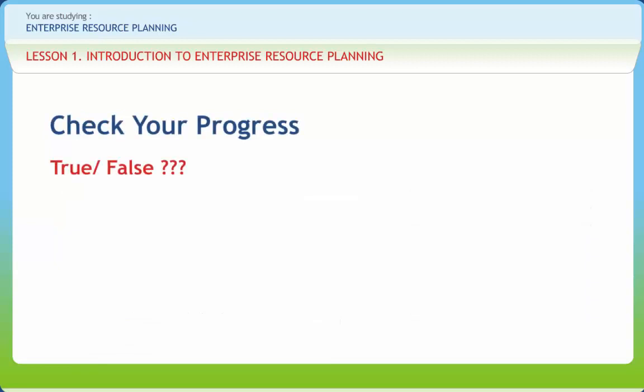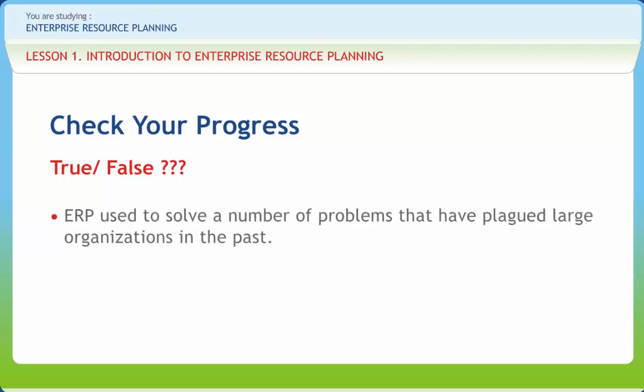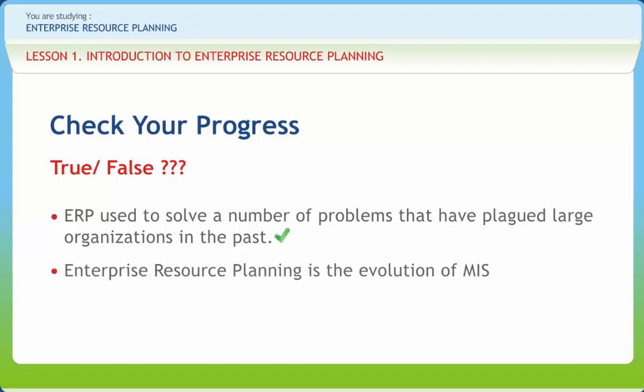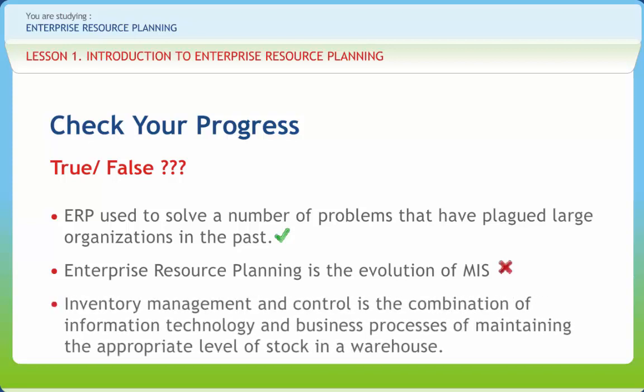Review questions: ERP is used to solve a number of problems that have plagued large organizations in the past — Right. Enterprise Resource Planning is the evolution of MIS — Wrong. Inventory management and control is the combination of information technology and business processes of maintaining the appropriate level of stock in a warehouse — Right.